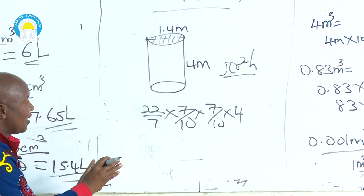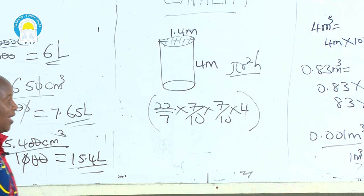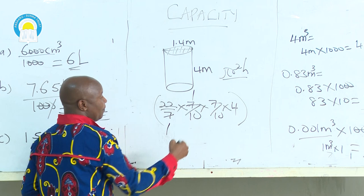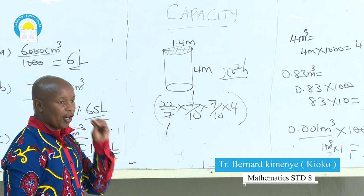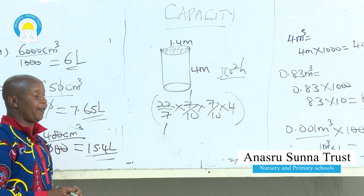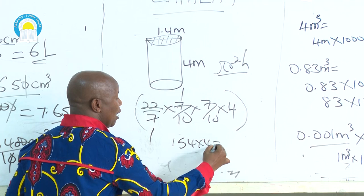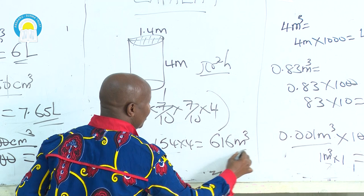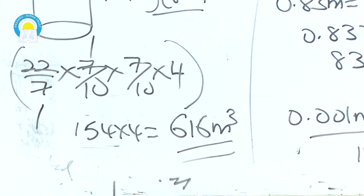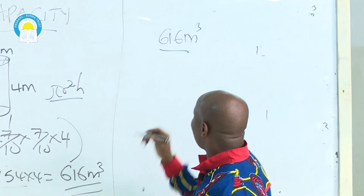So volume = 22/7 × (7/10) × (7/10) × 4. By 7 and 7, we get 1 and 1. We have 22 × 7 = 154, then multiplied by 4. There were two zeros from the denominator, so dividing gives us 6.16 cubic meters as the volume. Now the examiner is not interested in the volume — the question asks for the capacity in liters. Our volume is 6.16 cubic meters.